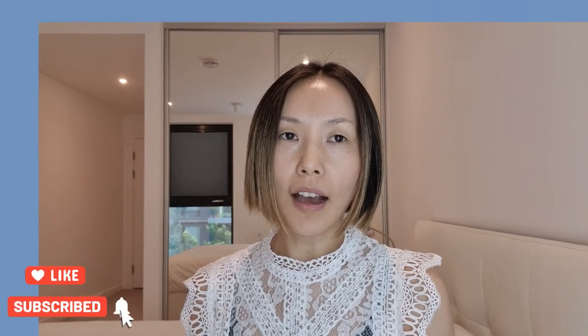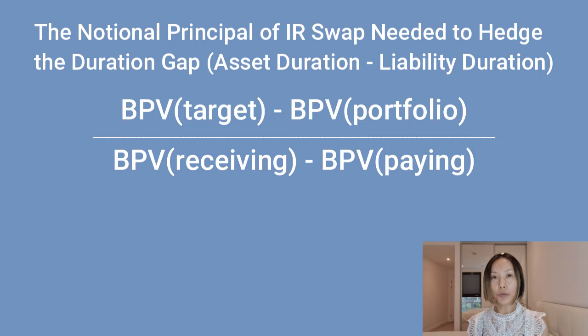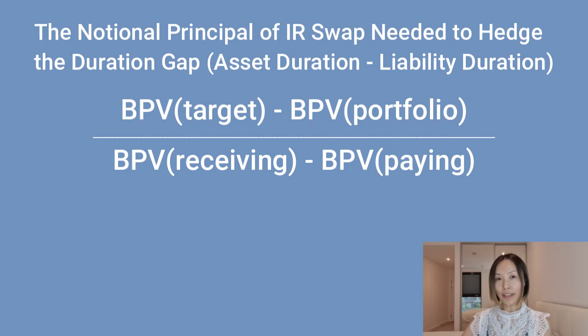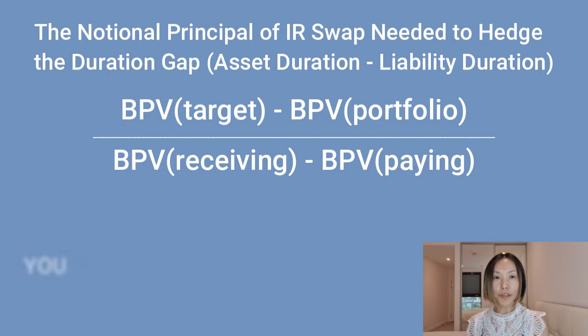Next we look at swaps — specifically how to calculate the notional principal needed if we are using swaps to hedge the duration gap. This equation also involves the BPV of your portfolio and your target, as well as the BPV of both sides of the swap.